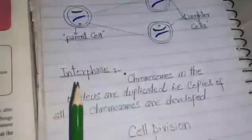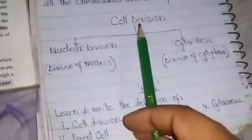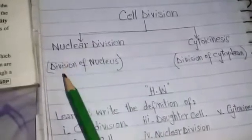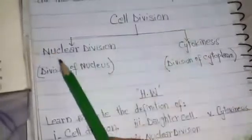After interphase there are two major portions of cell division: number one is nuclear division, and second one is cytokinesis. Nuclear division is the division of nucleus, and cytokinesis is the division of cytoplasm. These are the two major events of cell division.